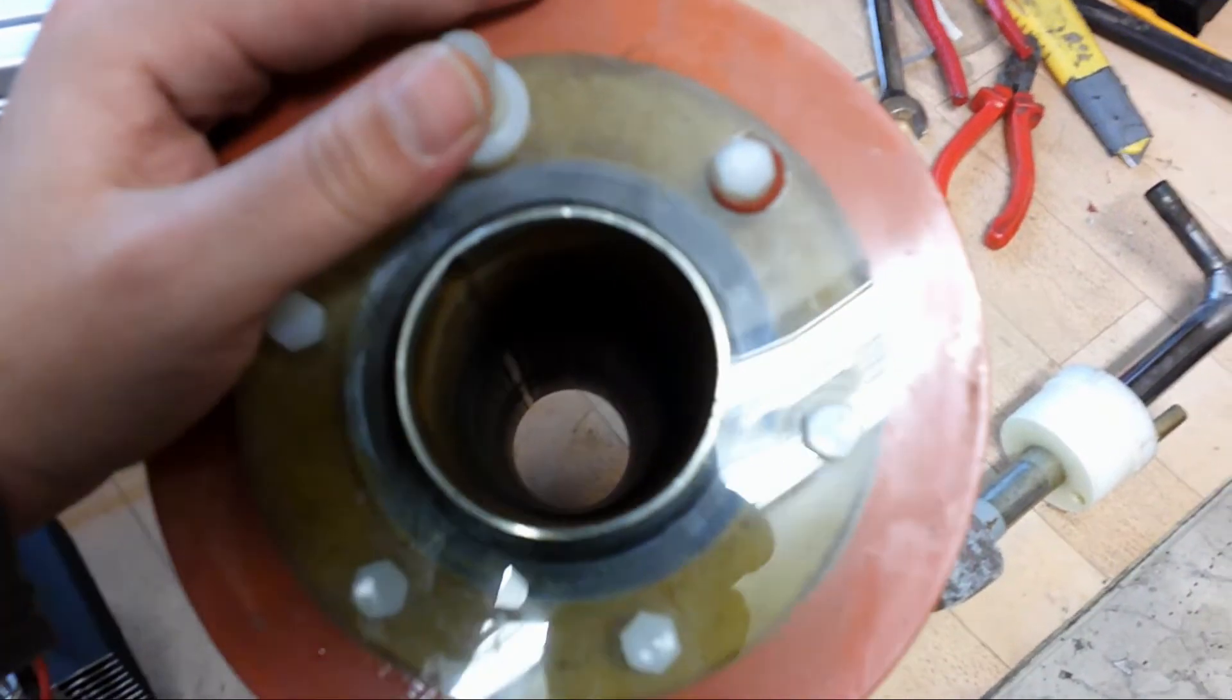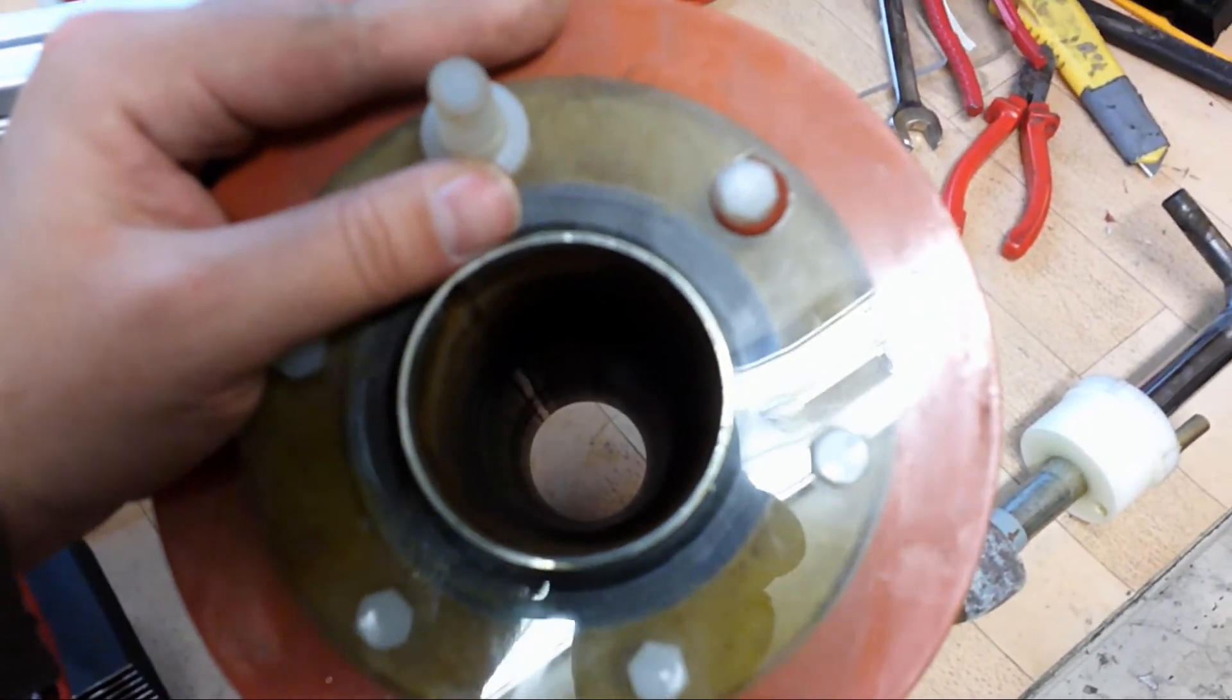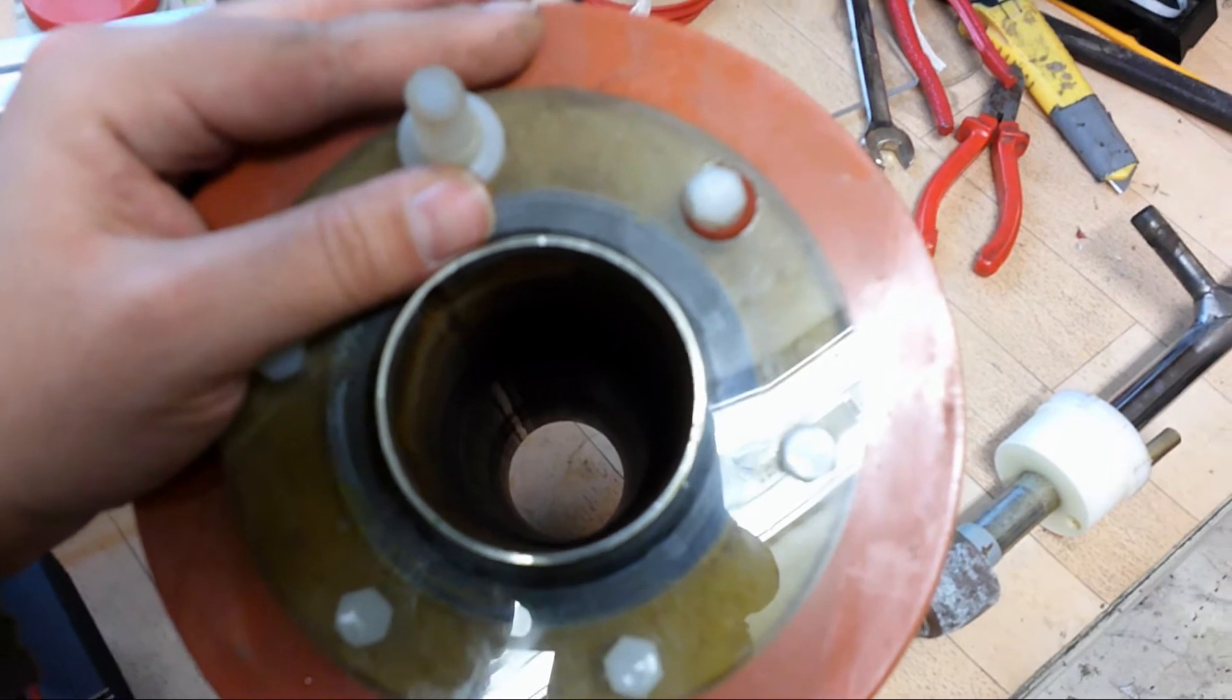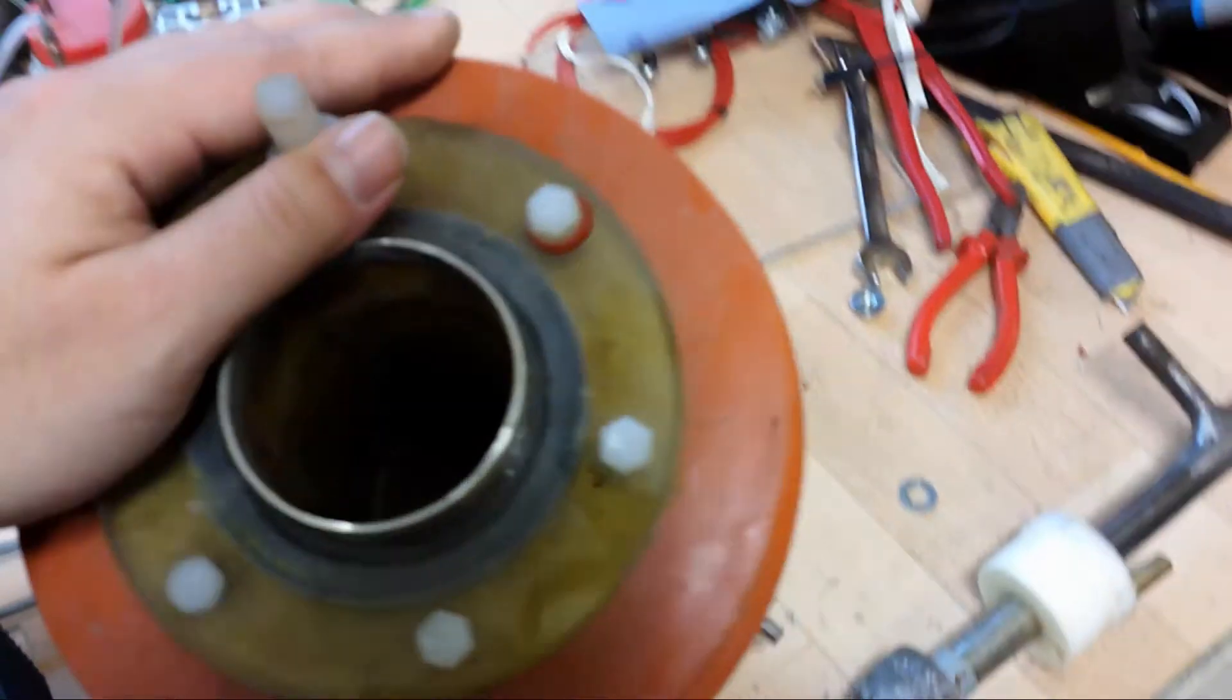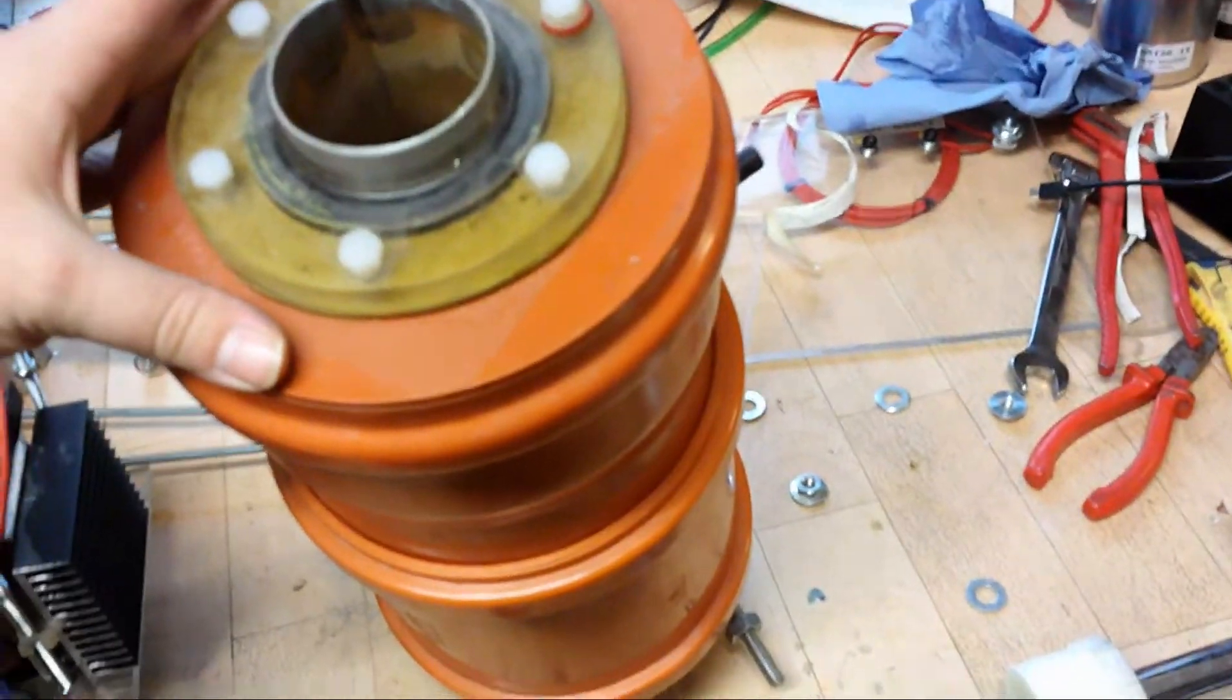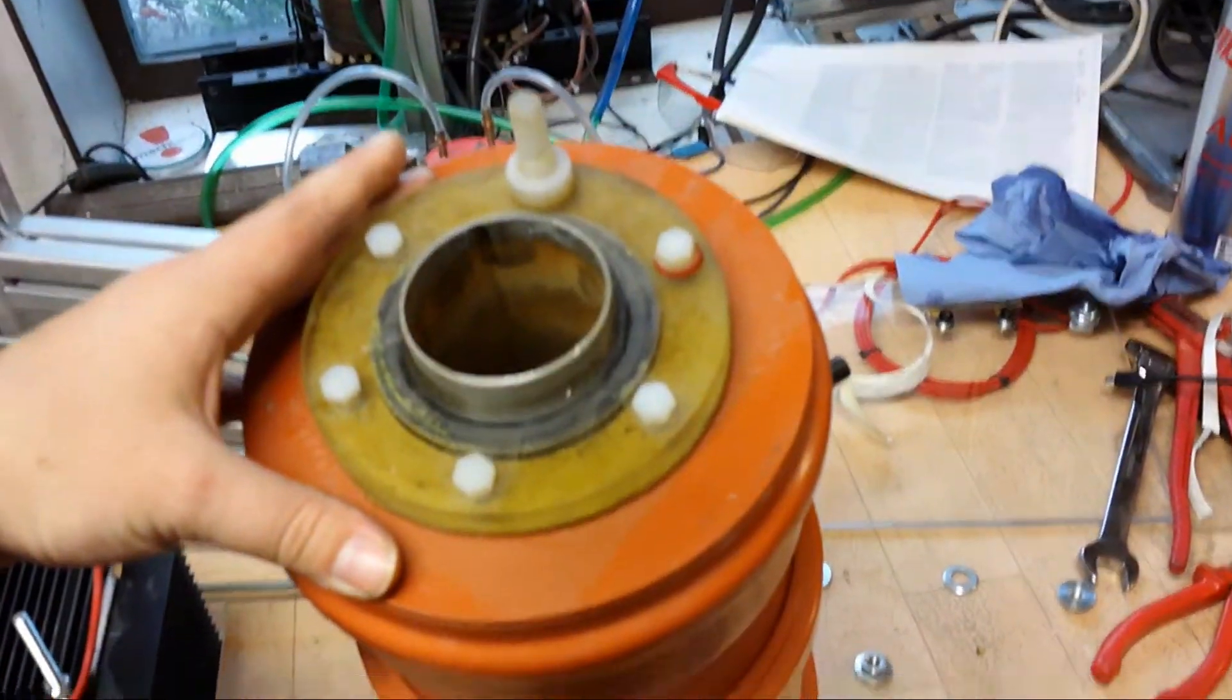As you can see here this is just the outer electrode. It's just a common stainless steel tube, nothing special. And here is the cooling mantle which I will disassemble now.